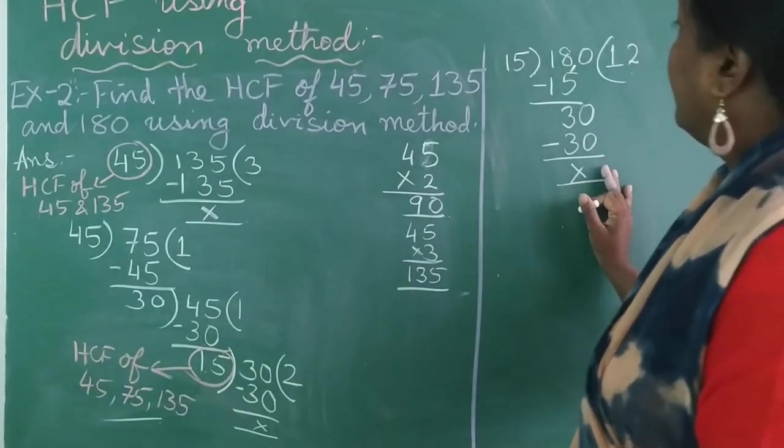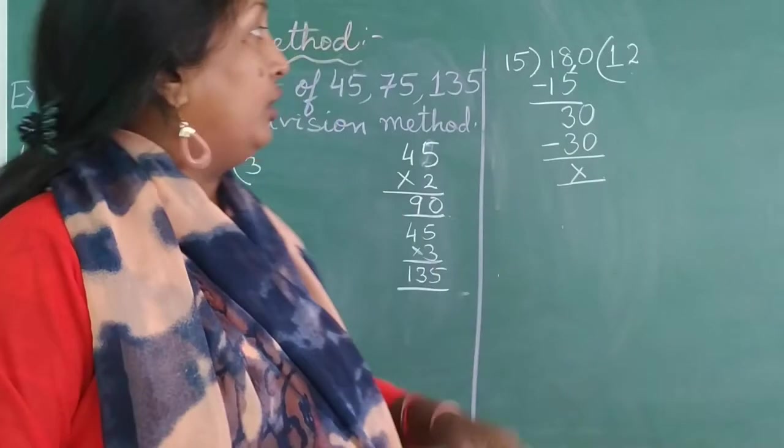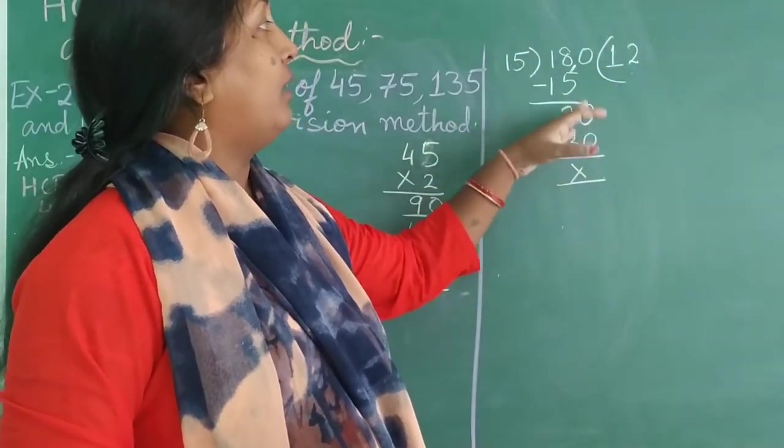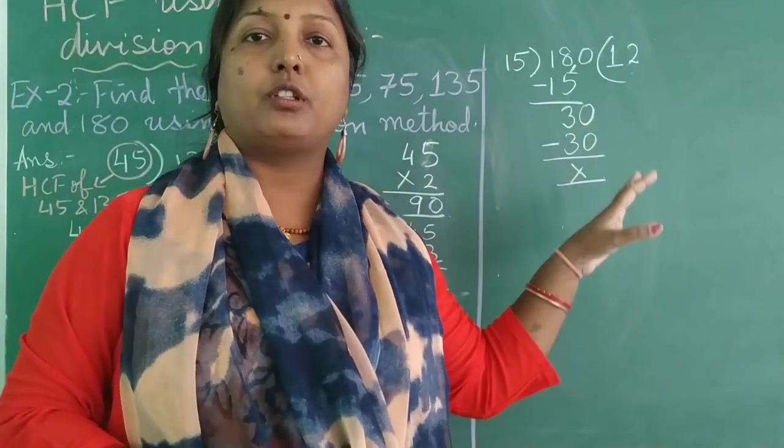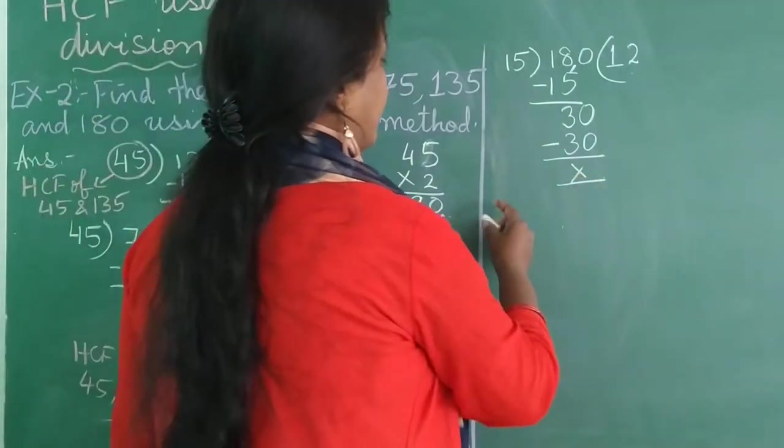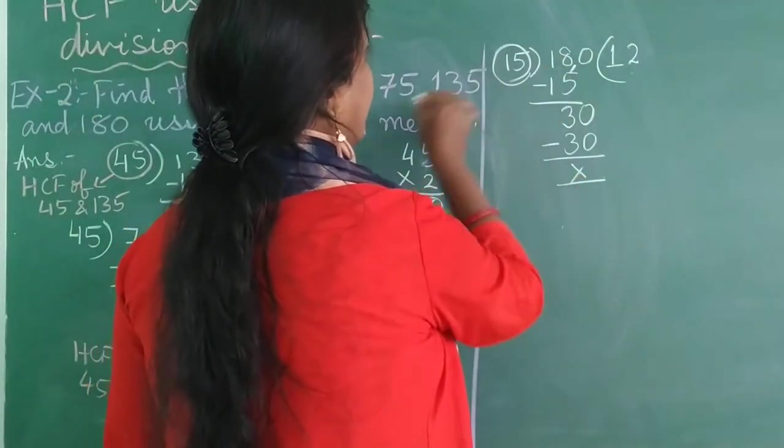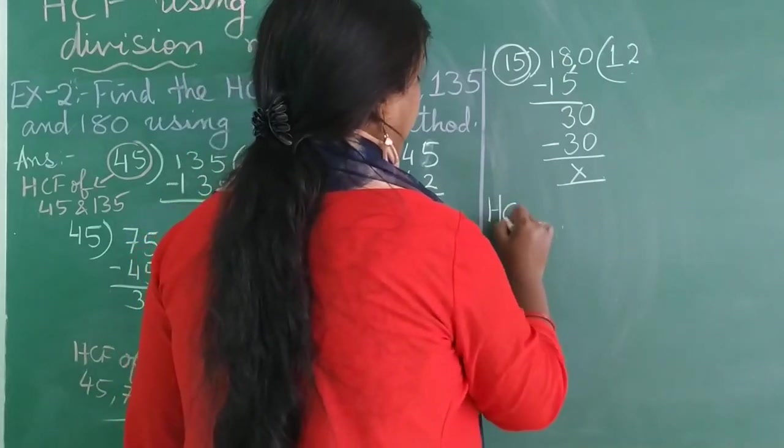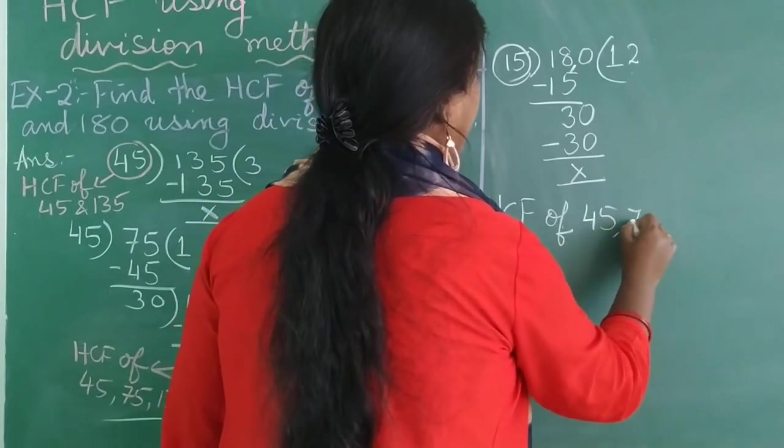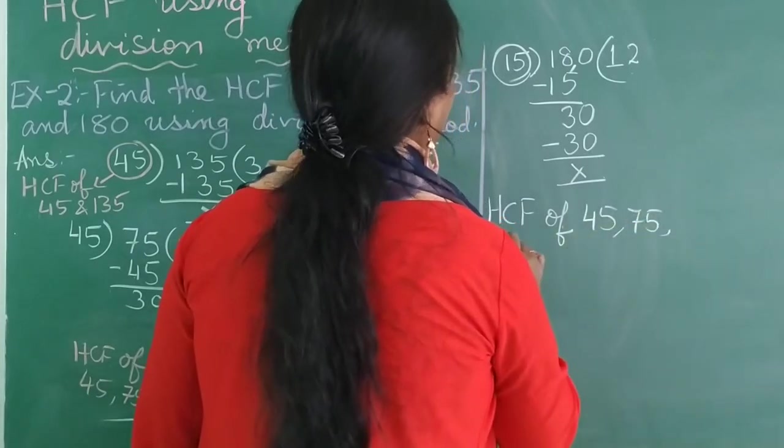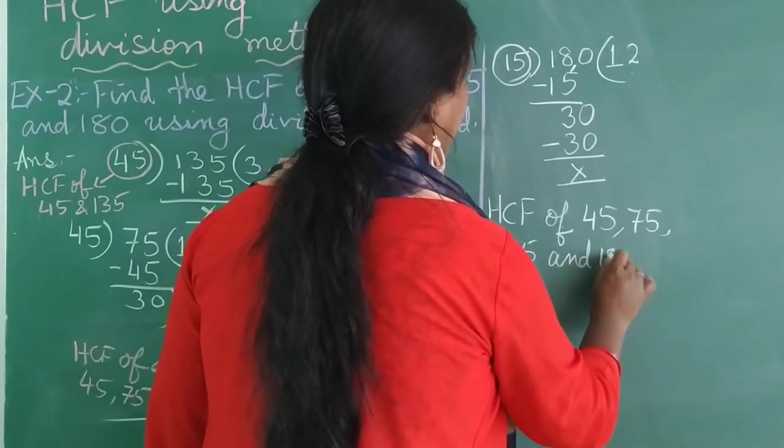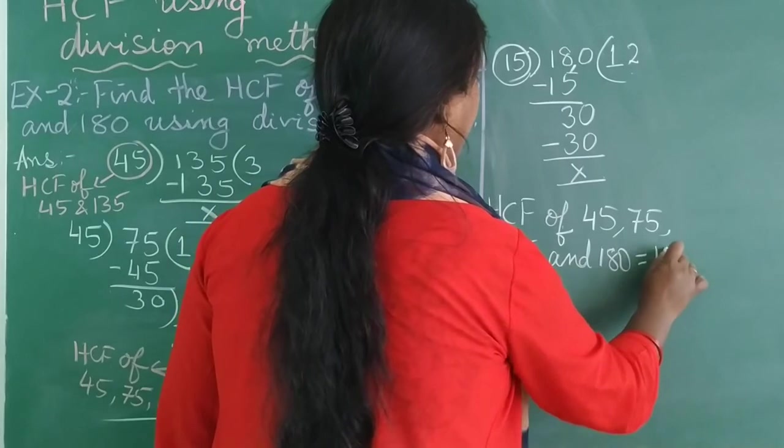But remember children, not to divide directly 15, 12s are. Don't do that. Don't go for 15, 12s are and 180 and finish it up. That is not the way of dividing. You will divide this way. And then once you get the remainder 0, we got this as our final divisor. So our HCF of 45, 75, 135 and 180 is equal to 15.